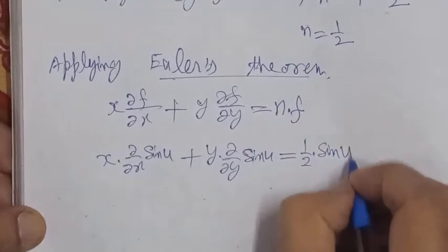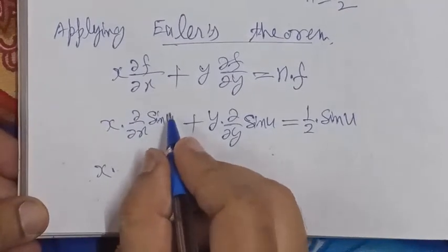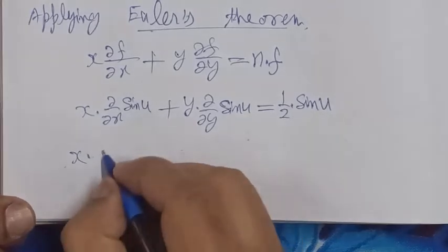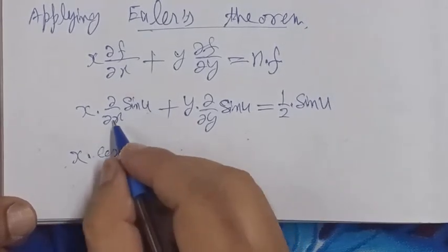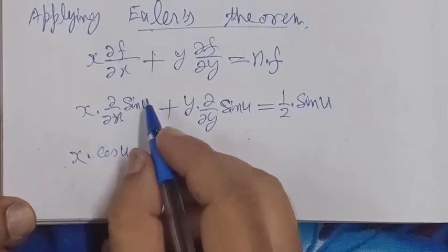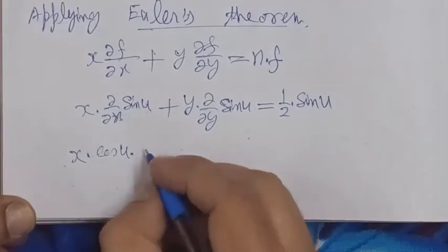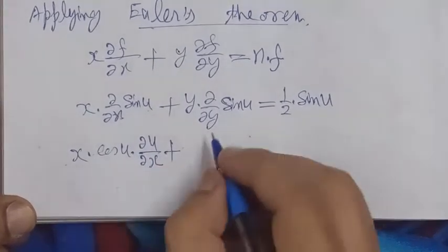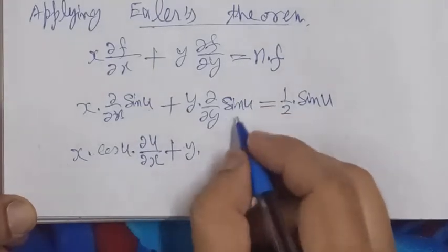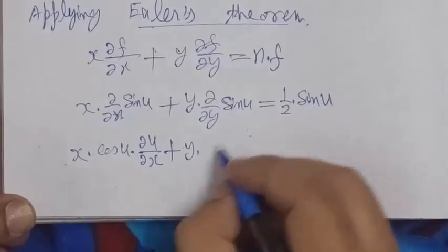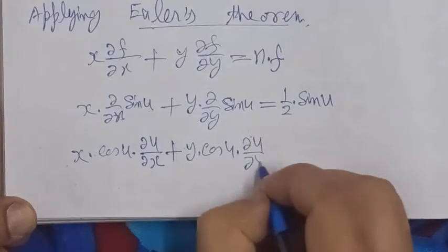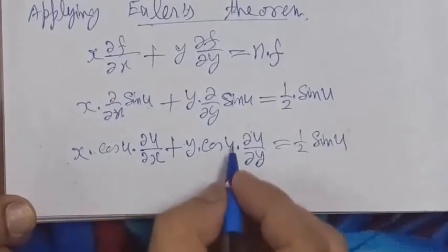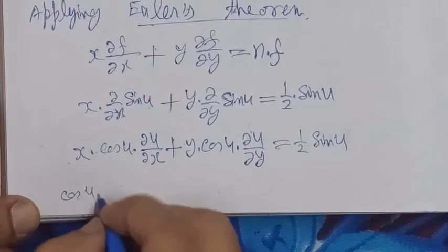Differentiating sin u with respect to x partially, we get cos u times del u over del x. Similarly, differentiating with respect to y, we get cos u times del u over del y. Taking cos u as common from both terms.